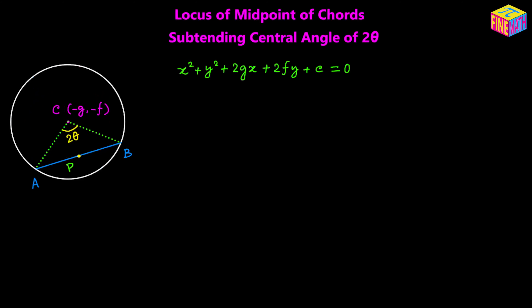If the equation of the given circle is x squared plus y squared plus 2gx plus 2fy plus c equals 0, then the coordinates of the center would be negative g comma negative f. Let's assume the coordinates of the midpoint P of chord AB are x sub 1 comma y sub 1. Joining C and P, since CP joins the midpoint of a chord from the center, this line bisects the central angle — so angle ACP and angle BCP each equal theta.